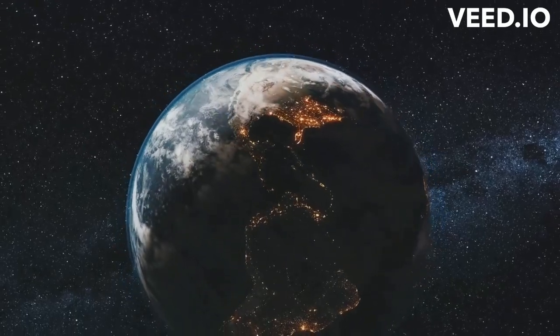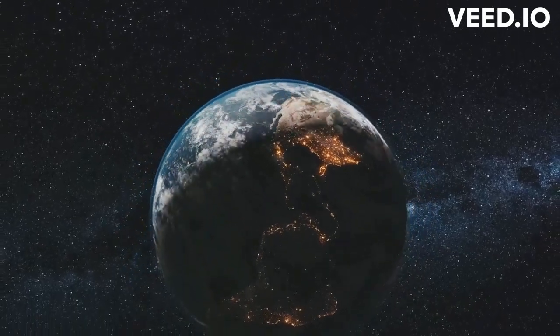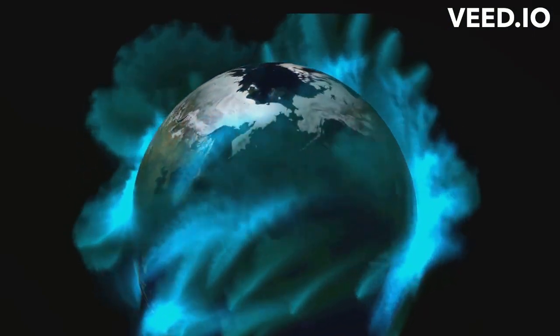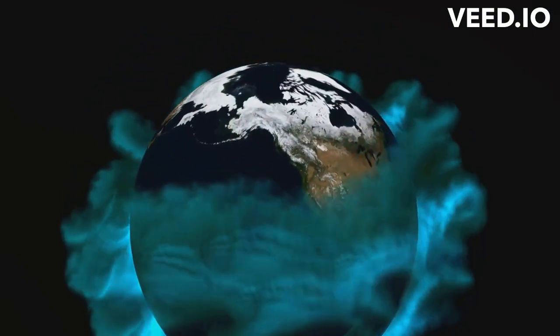With the Earth's spin gone, this magnetic field would weaken and eventually disappear. The surface of our planet would then be exposed to a barrage of harmful cosmic rays.